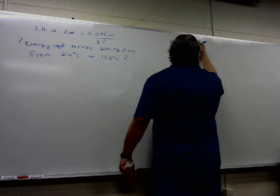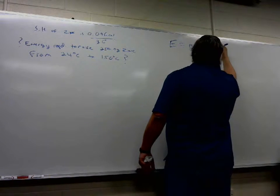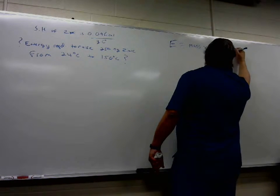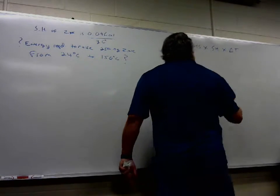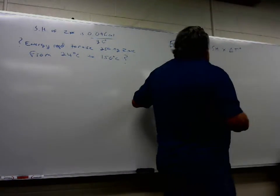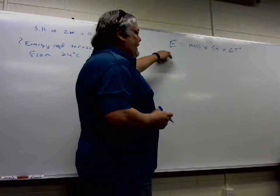Energy required equals mass of the object times specific heat times delta T. It's multiplication, you can switch it up, you can put them in any order you want. I've just learned it in this order.